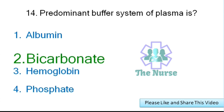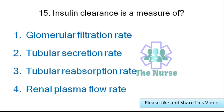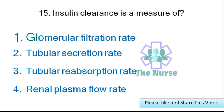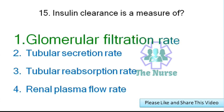Next question: Inulin clearance is a measure of which renal function? Options: glomerular filtration rate, tubular secretion rate, tubular reabsorption rate, or renal plasma flow. Correct answer: glomerular filtration rate.